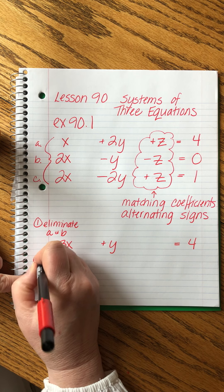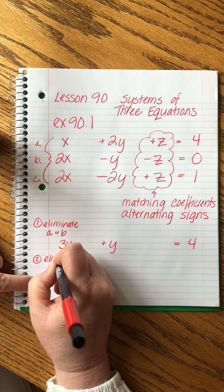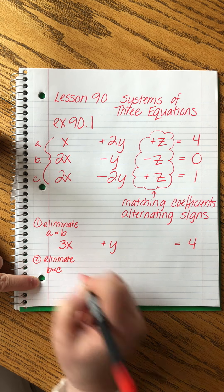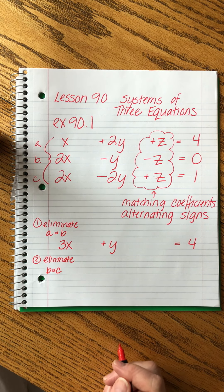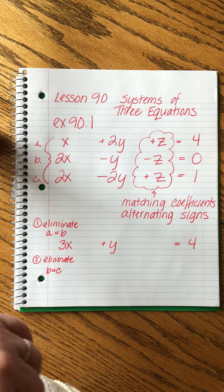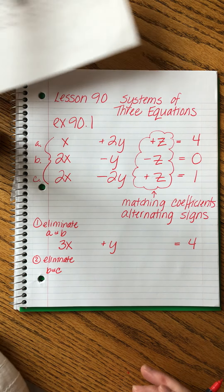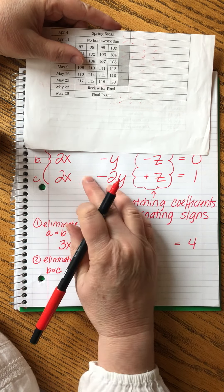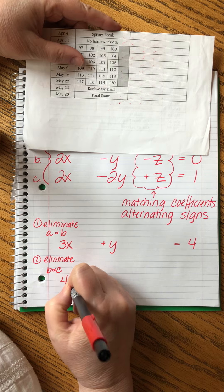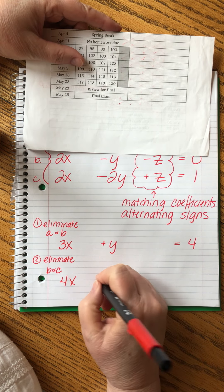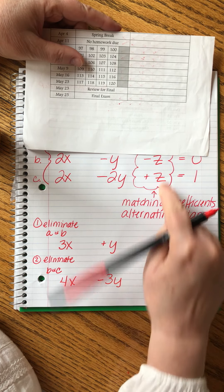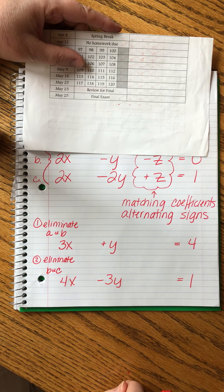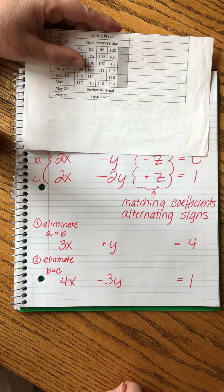Now for my second step, I'm going to eliminate B and C again, who knew? So now I'm ignoring, let me get a piece of paper and cover this up so I don't get confused. Now I'm eliminating these two. It'll be 4x minus 3y. The z's are gone. This equals one.